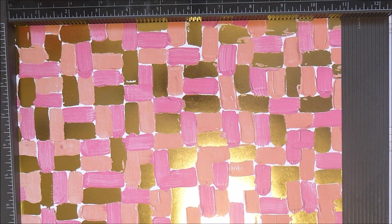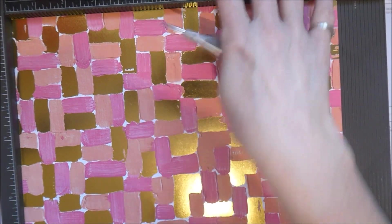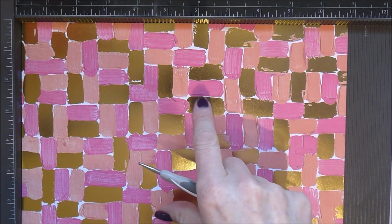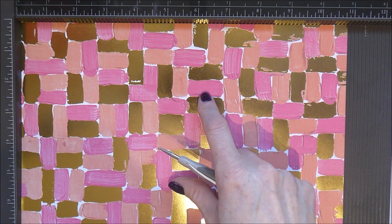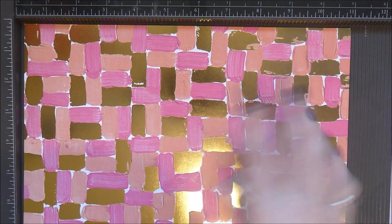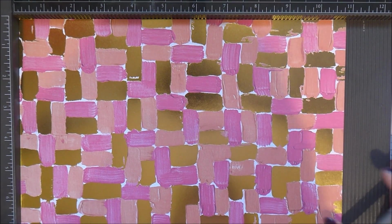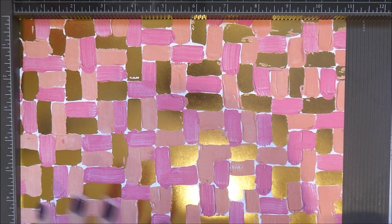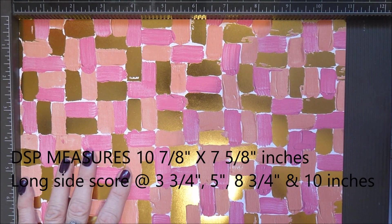So I am working with designer series papers from a new pack of papers which is in the 2018 Spring Summer catalogue and it is called Painted with Love. So you get 12 sheets of double sided papers foiled on one side like this and not foiled on the other. But just really attractive colours and things. So anyway, I'm going to crack on with this now and I can tell you that this piece of DSP measures ten and seven eighths by seven and five eighths.